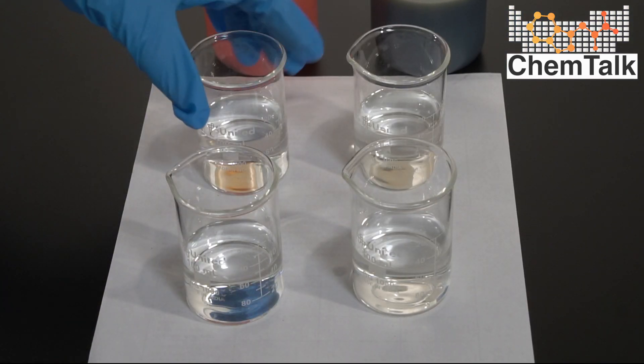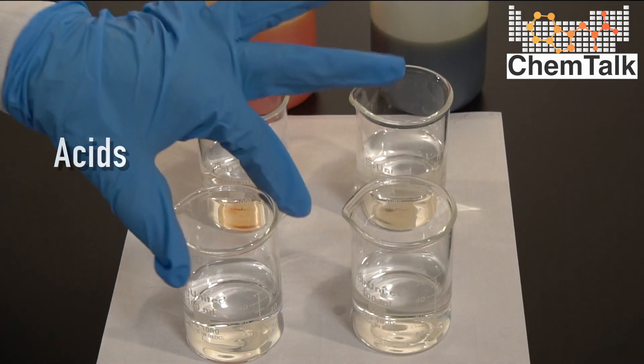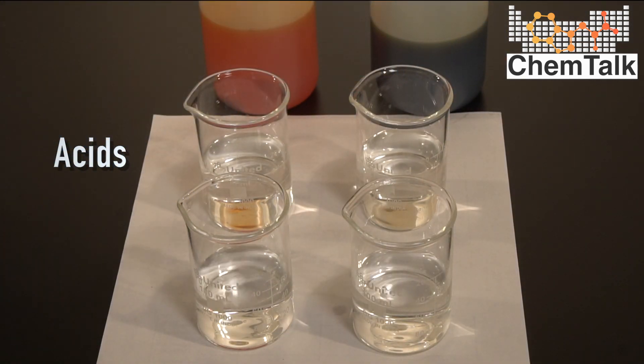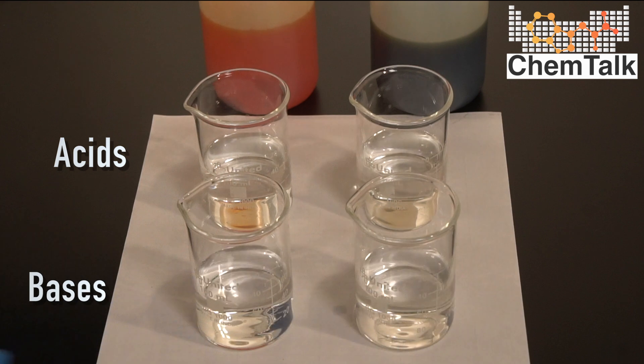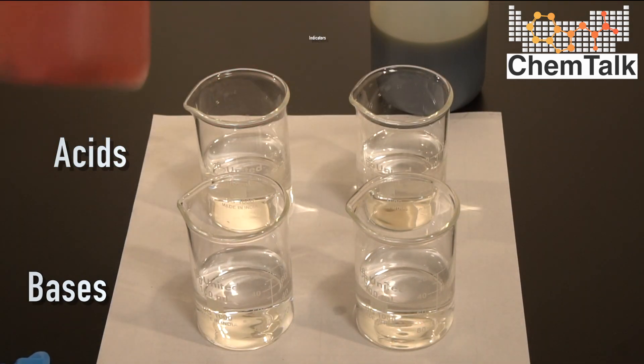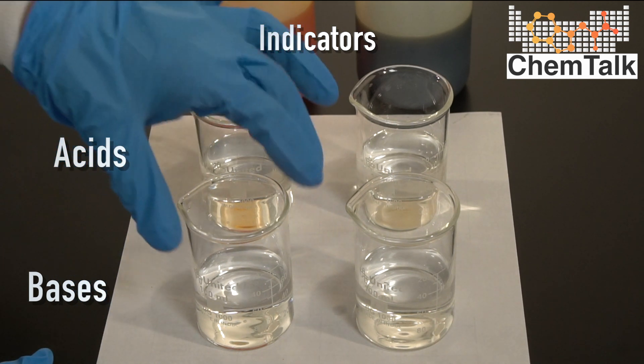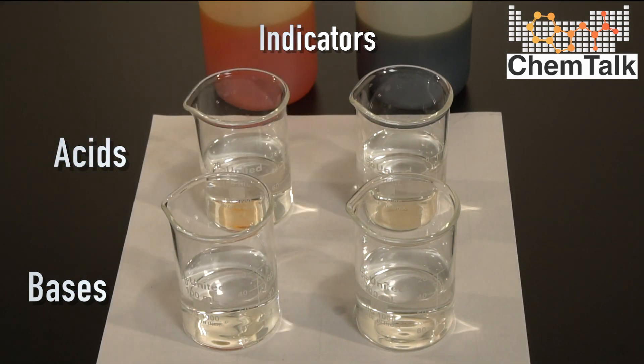So here I have two samples of acid. Acetic acid is in these two beakers and in here I have a solution of potassium hydroxide. We got our acids and our bases. And what I'm going to do is put the phenol red indicator and the bromothymol blue indicator into both the acid and the base just to see what color we should expect.